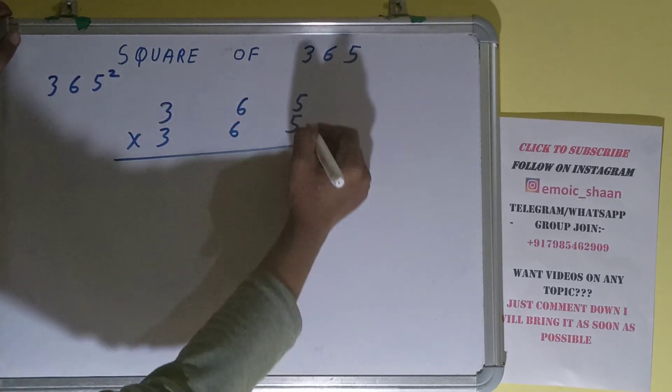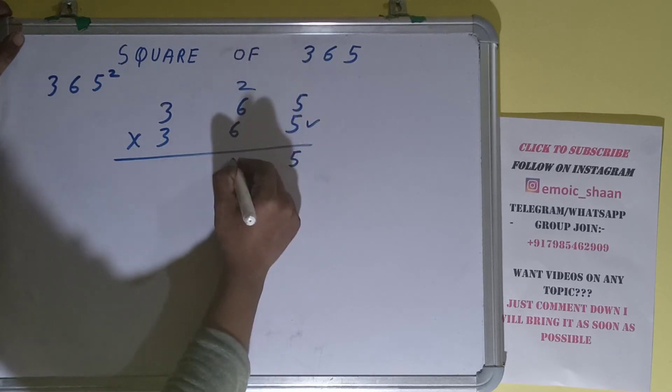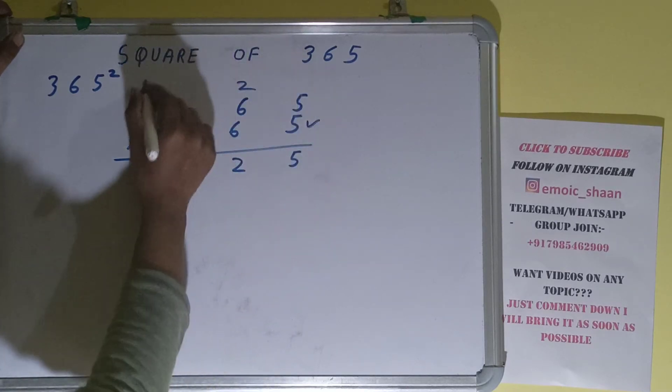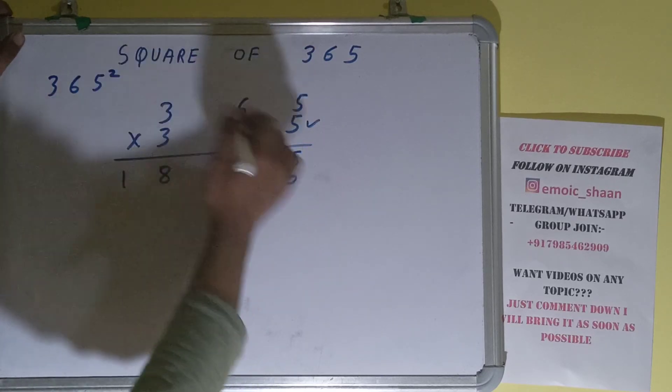So let's start with this. 5 times 5 is 25, carry 2. 6 times 5 is 30 plus 2 is 32, carry 3. 5 times 3 is 15 plus 3 is 18. Now this 6: 6 times 5 is 30, carry 3.